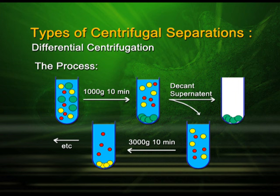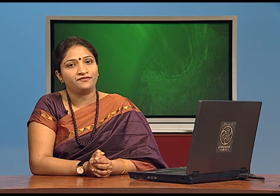Again, that pellet is decanted, the supernatant is taken, and it is subjected to a slightly higher centrifugation. This process is known as differential centrifugation, where the cell homogenate is subjected to repeated centrifugation by slowly increasing the RPM and RCF. An example of differential centrifugation is cell fractionation.